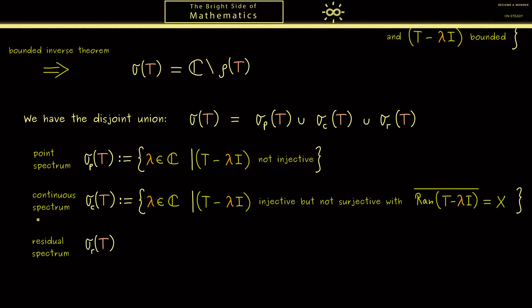This also explains the last name: the residual spectrum just gets all other points. Here the operator is injective but not surjective, and even the closure of the range is not X. Here I can tell you for the property that the closure is the whole set X, we simply say the range lies dense in X. Later you will see that for many important examples, the last set is indeed empty. This is not always the case, but for these examples we only have to deal with these two sets here.